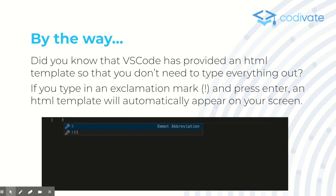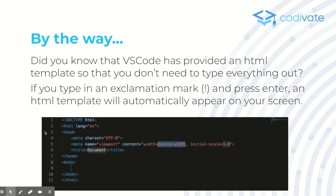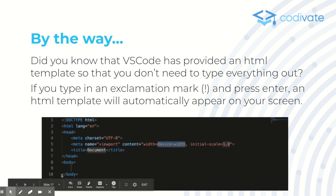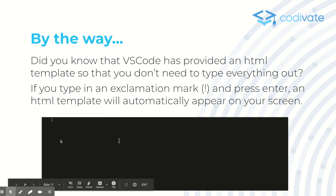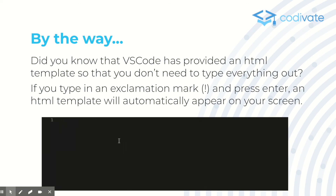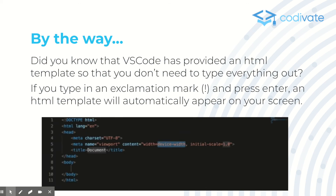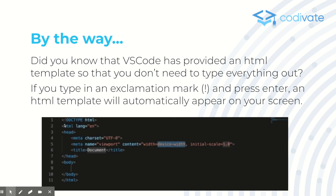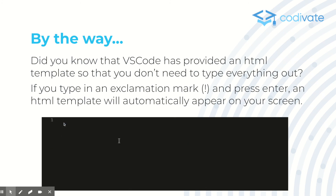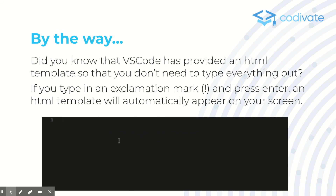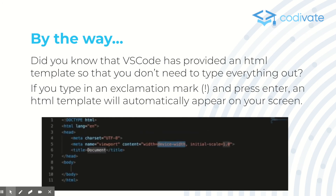There is actually an HTML template shortcut: if you type the exclamation mark and press Enter, it generates a whole template for you. So you don't really have to remember meta charset equals UTF-8 or meta name equals viewport, width equals device-width. Just use the exclamation mark and press Enter — keyboard shortcuts are very helpful when writing HTML.